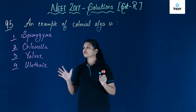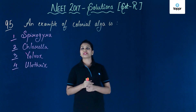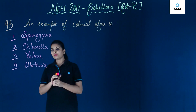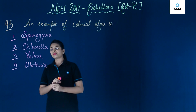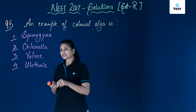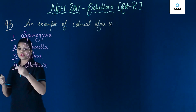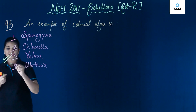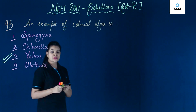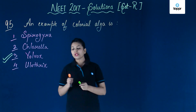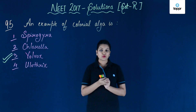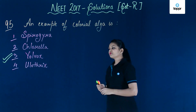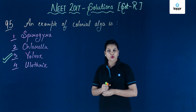Hey kids, this question is about an example of colonial alga. If we look at the options, we see that the correct answer is Volvox. Volvox is the only alga which forms colonies; the rest all live in a solitary habitat. So the correct answer to this is Volvox.